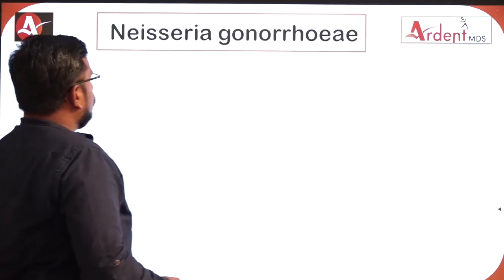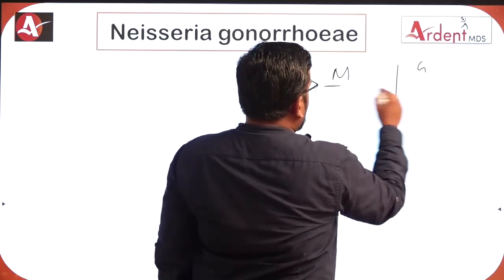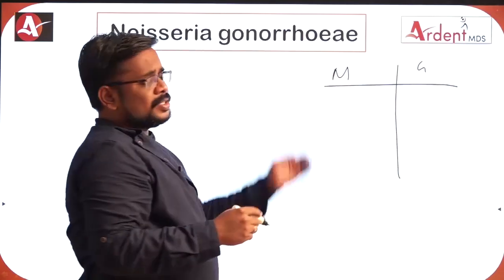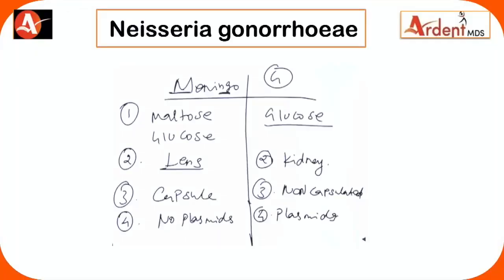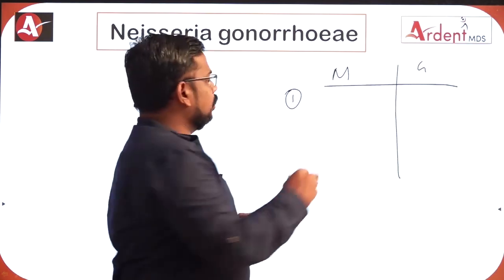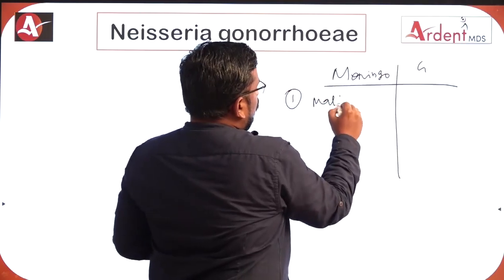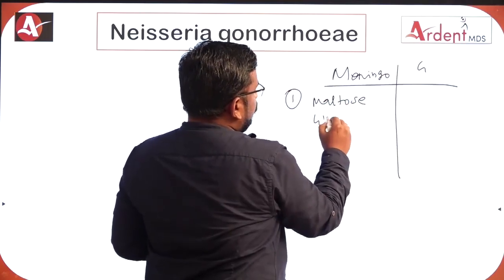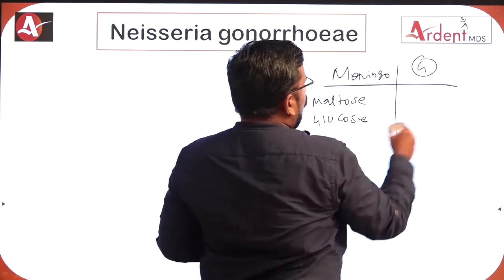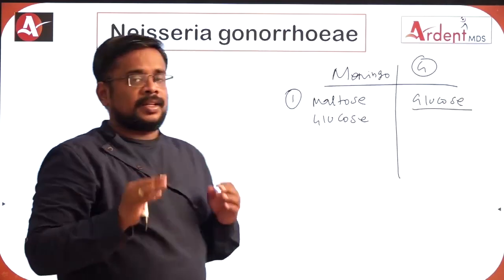Let's start with gonococci. We need to know the basic difference between meningococci and gonococci. Even though meningococci was discussed in the previous session, let's do a fast recap. Meningococci ferment both maltose and glucose, but gonococci ferment only glucose.